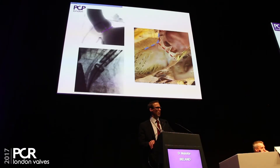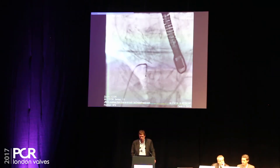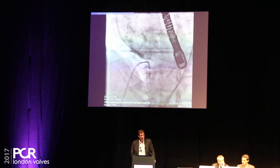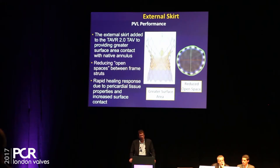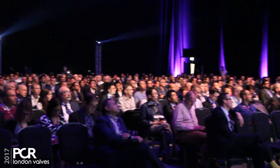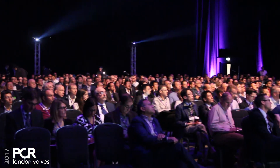We're going to really focus on how to use imaging for patient selection — how to use echocardiography, how to use CT scans — and how to use that information to plan for the procedure, whether it's for the aortic, mitral, or tricuspid valve.